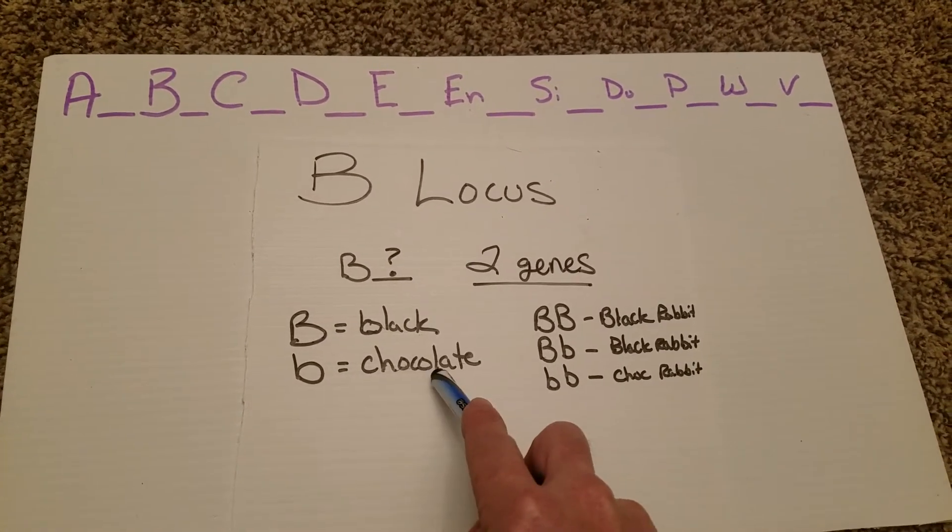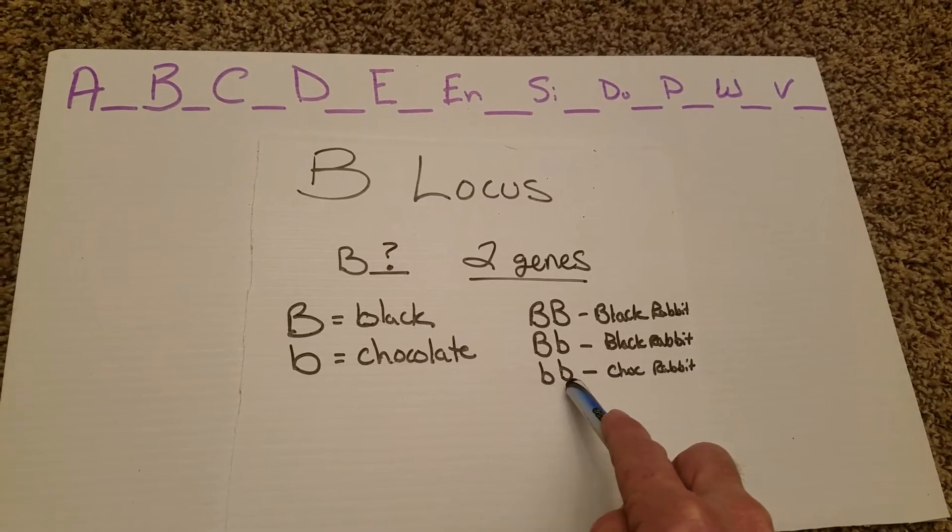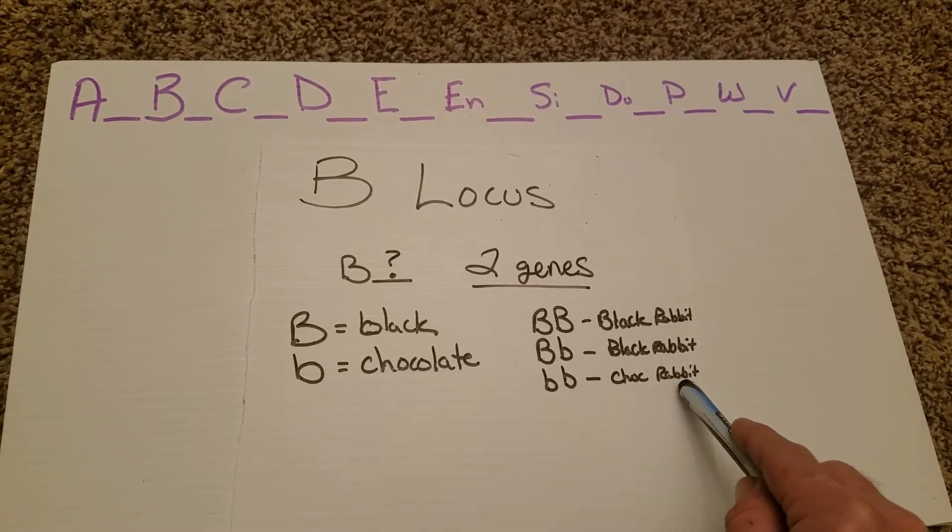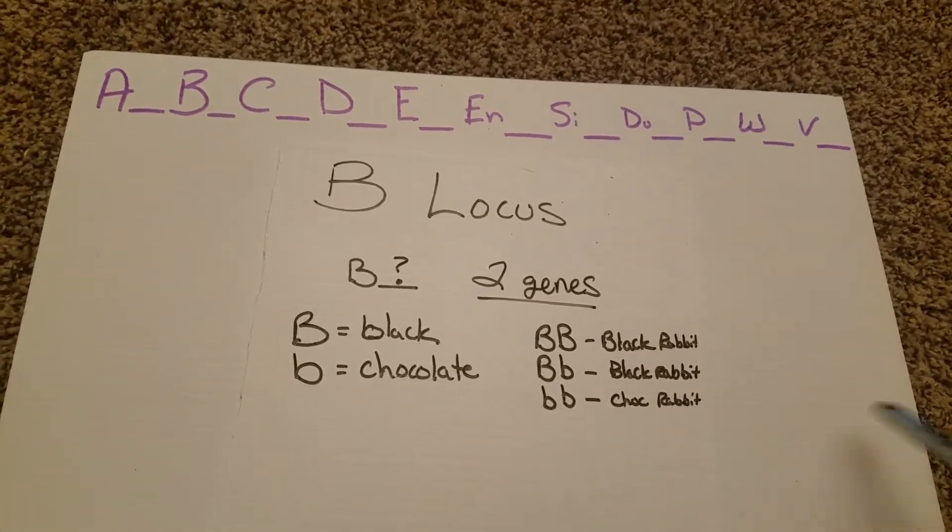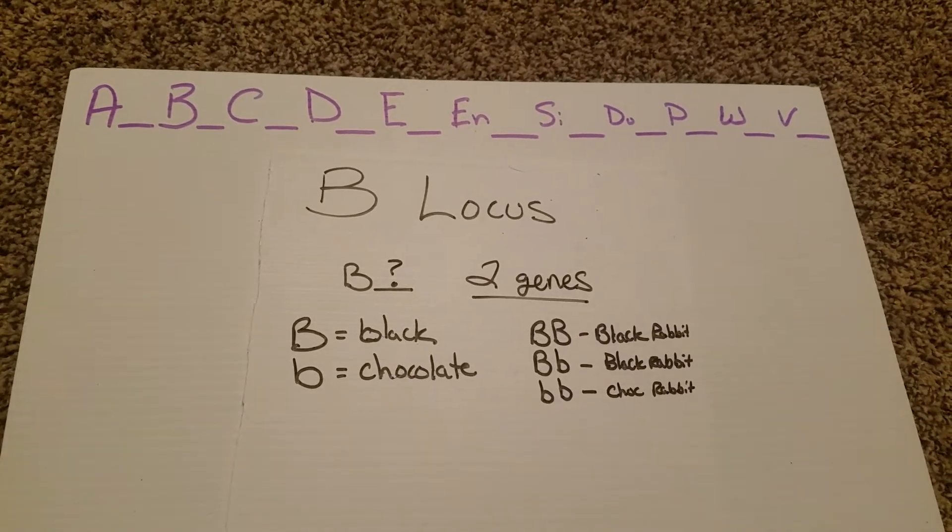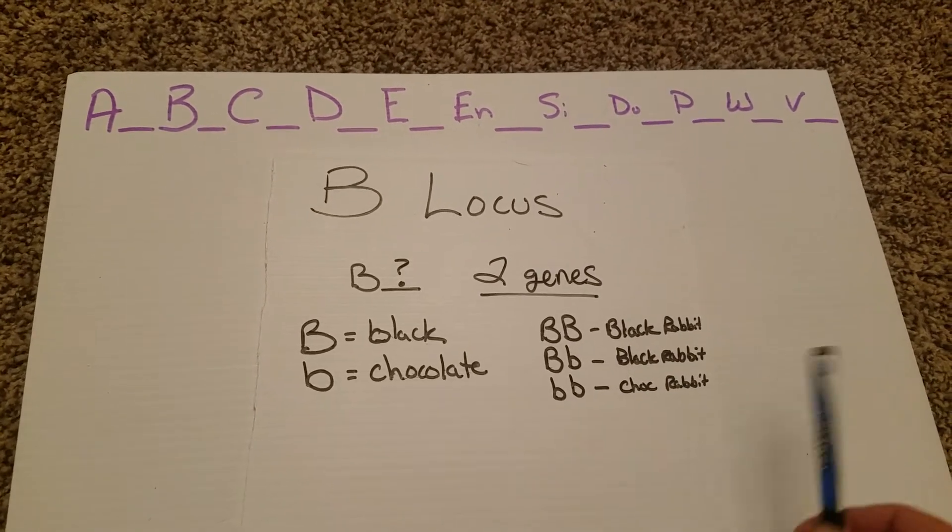So again, if we have only two chocolates, two small b's, that would be a chocolate rabbit. Chocolate rabbits cannot have the dominant black in their genotype. Now, some people will say,